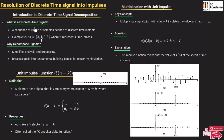In our previous lecture, we understood what a discrete time signal is — a sequence of values or samples defined at discrete time intervals or discrete time instants. The discrete time signals are represented only at discrete intervals of time.